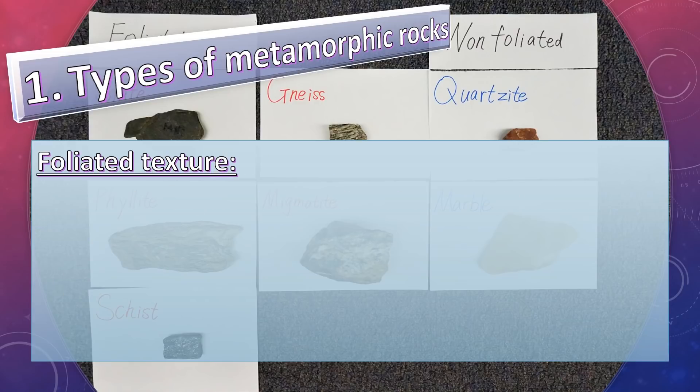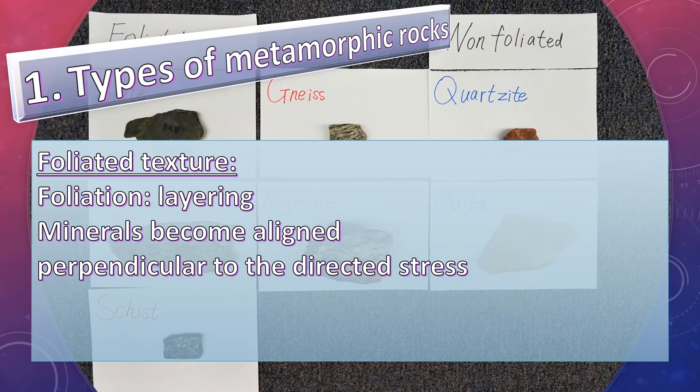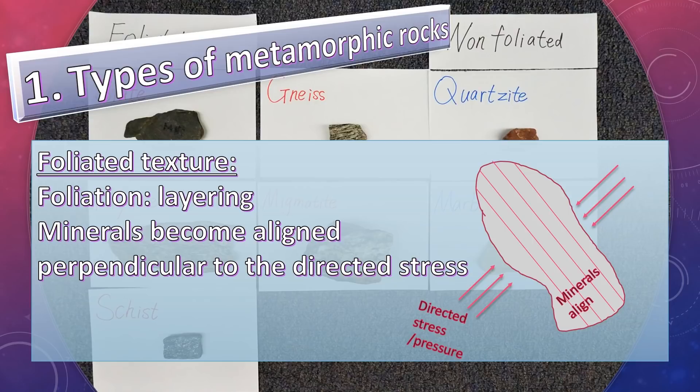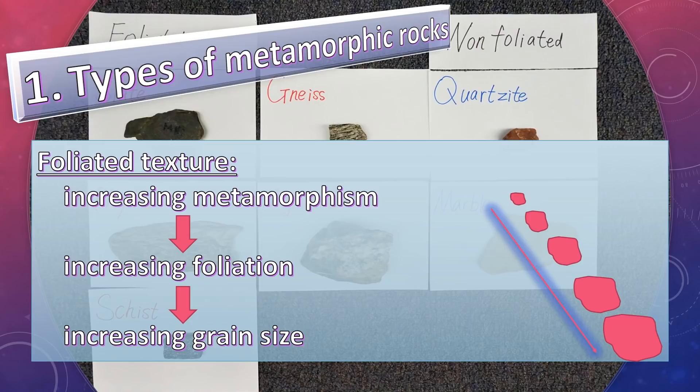Foliated texture. Foliation means layering. Minerals become aligned perpendicular to the directed stress. This figure shows the direction of the stress or pressure and minerals aligned perpendicular to the stress. With increasing metamorphism, foliation is also increasing and the grain size is increasing.